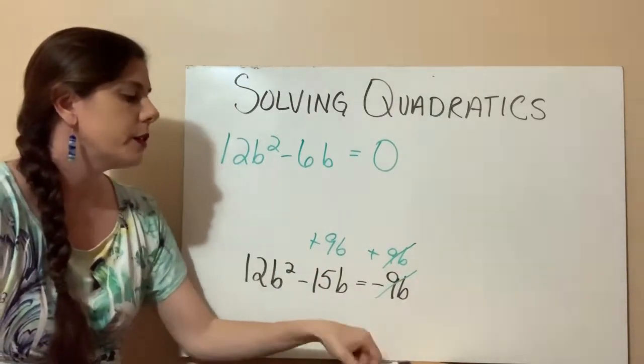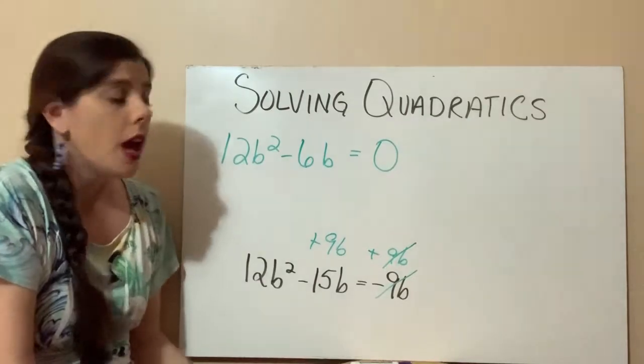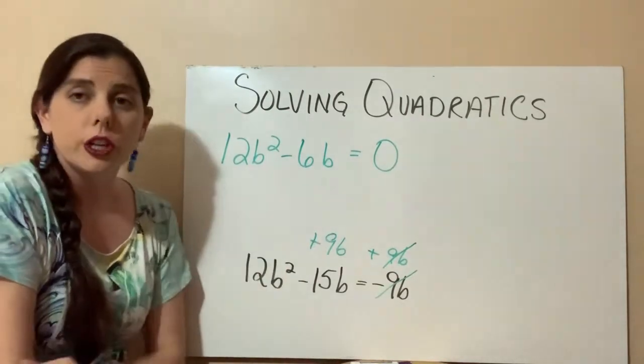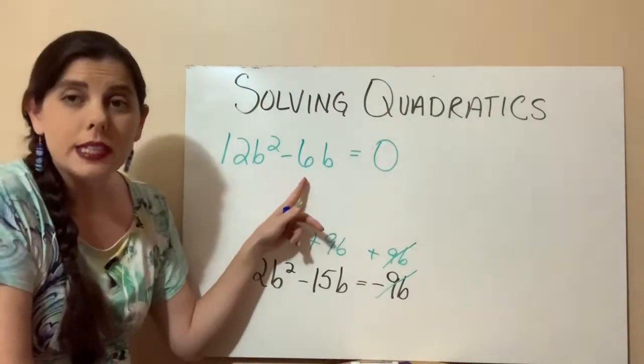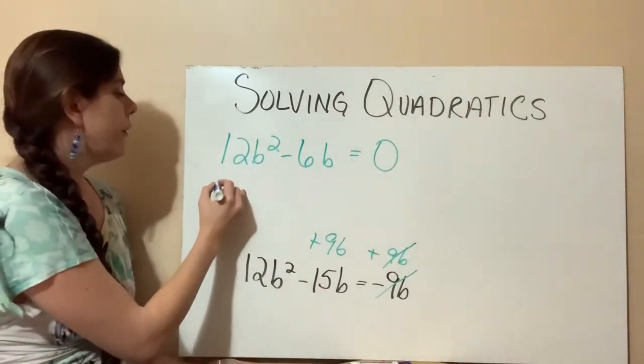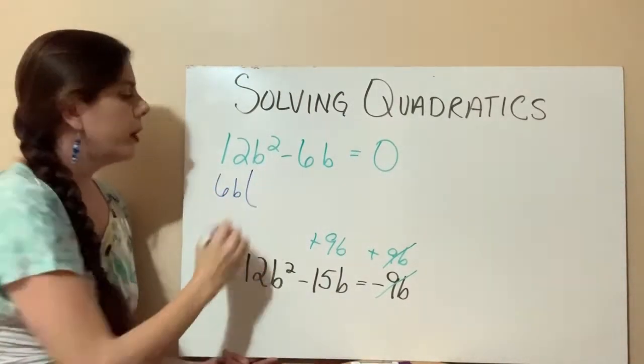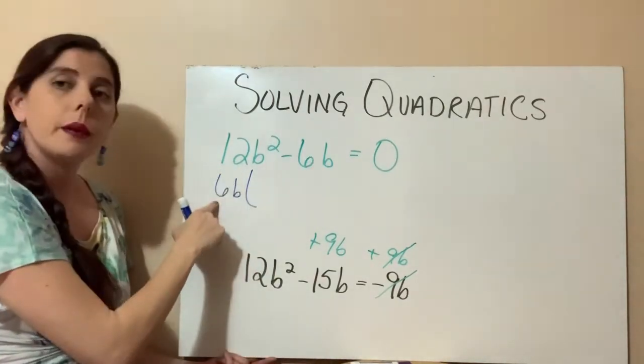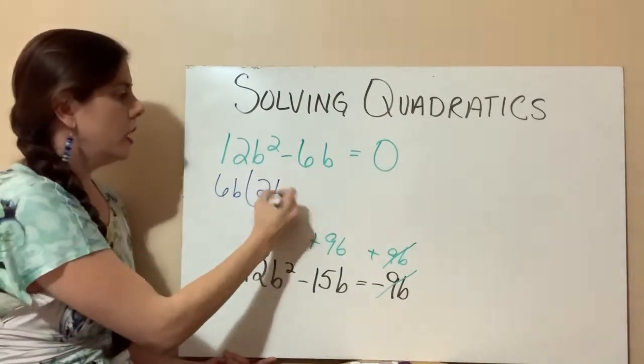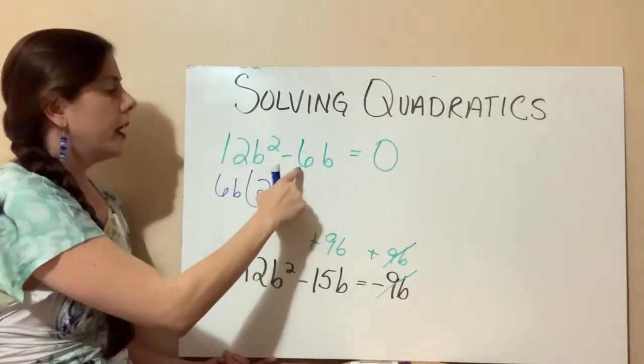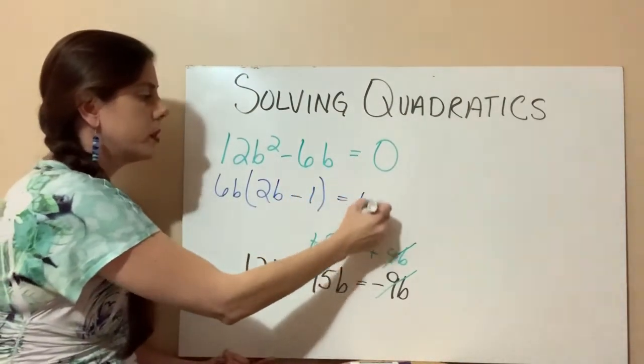So the next step to factoring this equation is, in this case, I can see I have a GCF. I have a b in each term, so each term can be divided by a b. And I know that each term can be divided by a 6. All right, so if I take out a 6 and a b, in parentheses, I'm going to be left with 12 divided by 6 equals 2. b squared divided by b equals b. And then a negative 6b divided by a 6b is just going to be a negative 1. And that equals 0.